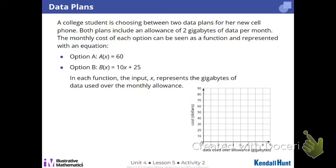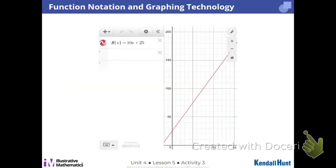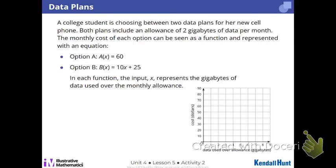Does everybody understand what that means? You get 2 gigs for free or whatever part of your plan, and then there's a charge for everything over. And there's an option A or option B for these two. That's where you can see the A of X and the B of X. So here's our two options. Our two options are option 1 and option 2, option A, option B.